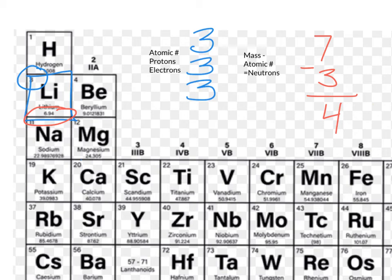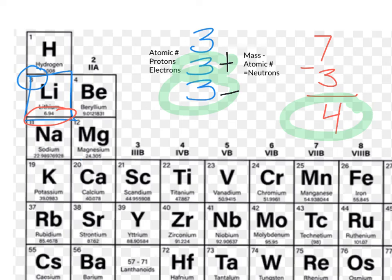Notice how for lithium, we have a different number of protons, electrons, and neutrons. In this case, our protons and electrons are 3, and our neutrons equals 4. This means that one atom of lithium has 3 positive charges, 3 negative charges, and 4 particles without a charge or no charge.